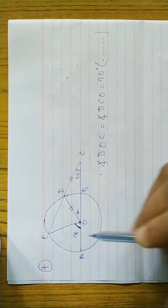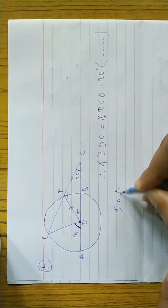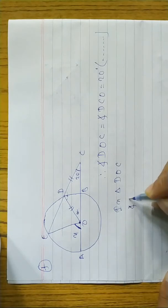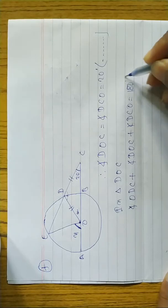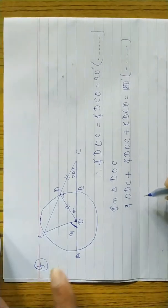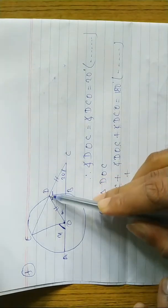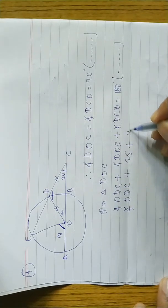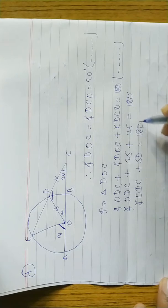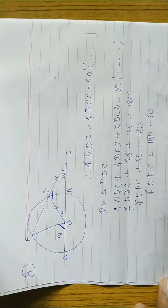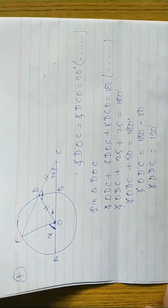In triangle DOC, angle ODC plus angle DOC plus angle DCO equals 180 degrees — sum of angles of the triangle. DOC equals 25 and DCO equals 25, so angle ODC plus 50 equals 180, therefore angle ODC equals 130 degrees.